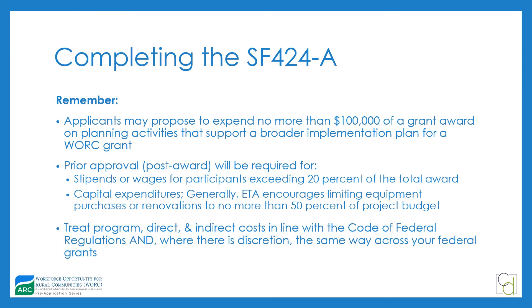There are specific things to remember when budgeting for your projects. You may propose to expend no more than $100,000 of a WORK grant award on planning activities that support a broader implementation plan — that's new for this year. You will also need post-award approval if stipends and wages for participants exceed 20% of your total award, and for capital expenditures.